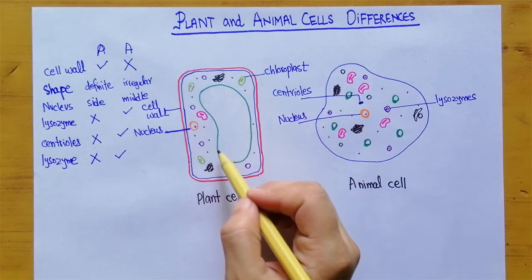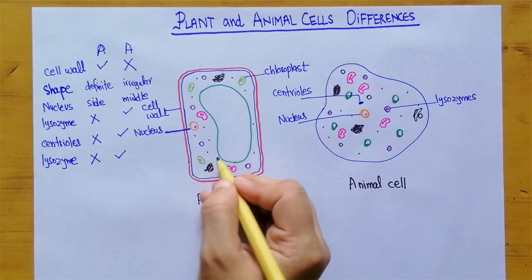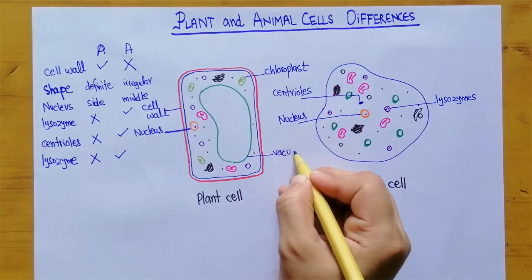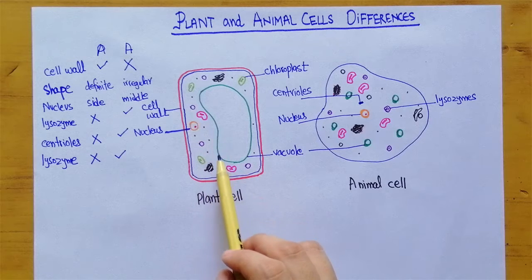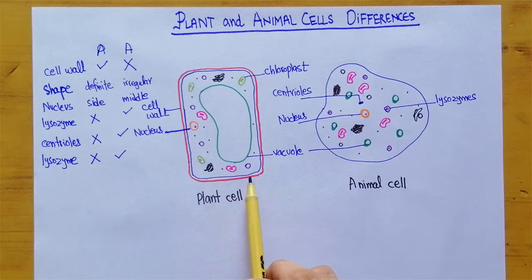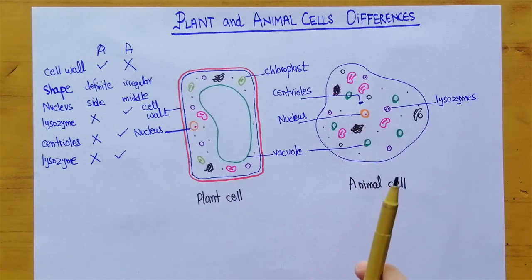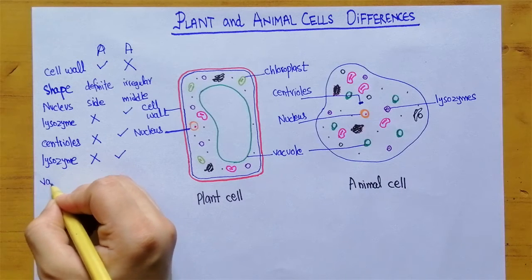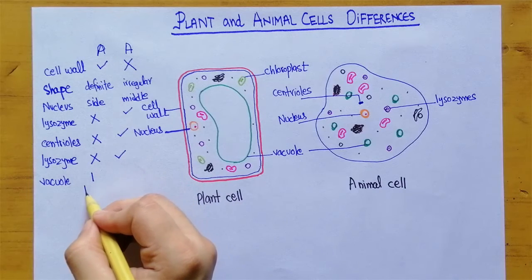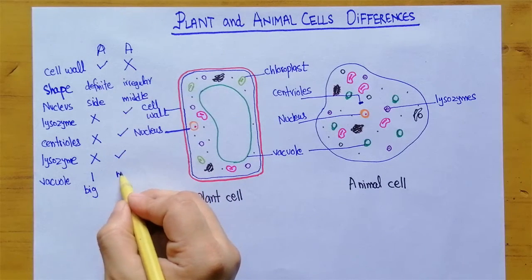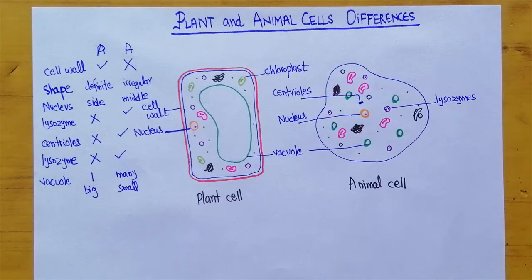Another difference is the vacuole. In plant cells there is one big vacuole present, while in animal cells there are many small vacuoles. This is another identification feature — in plant cells just one large vacuole, while in animal cells there are many but they are very small.